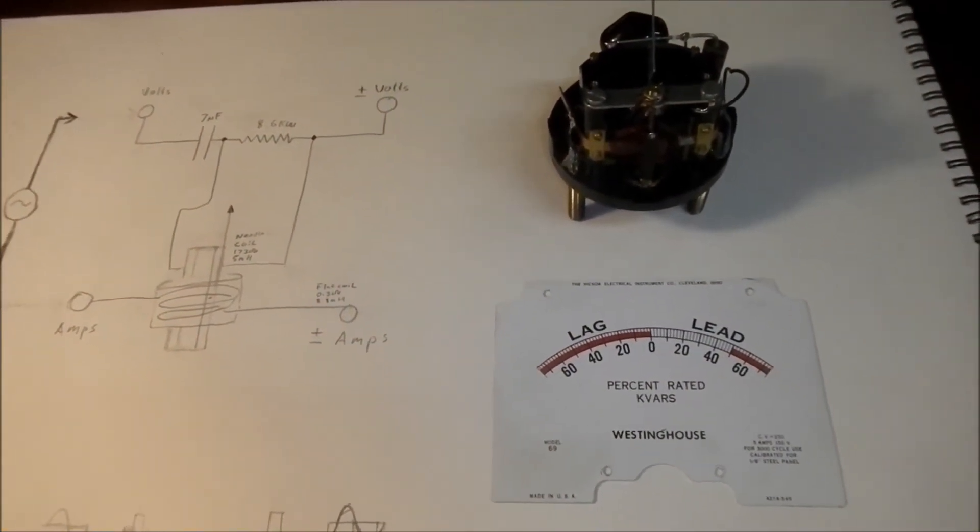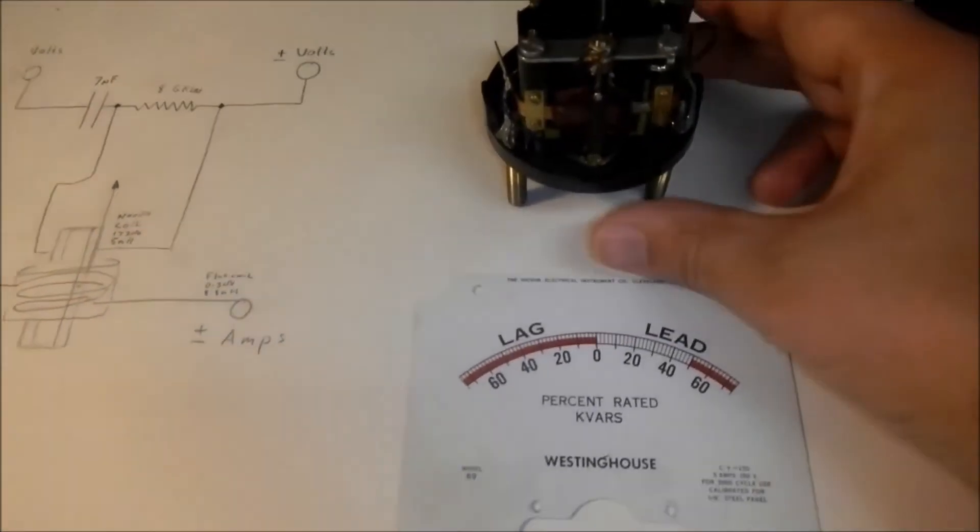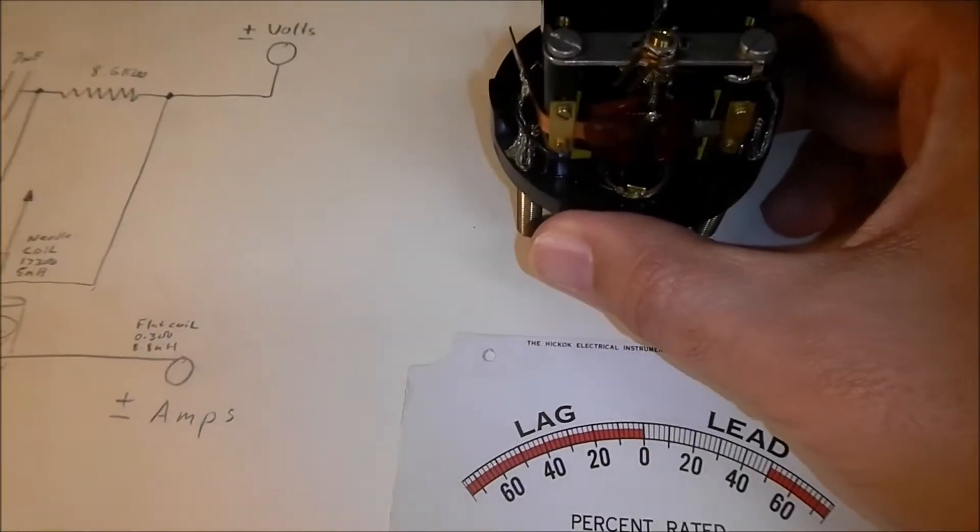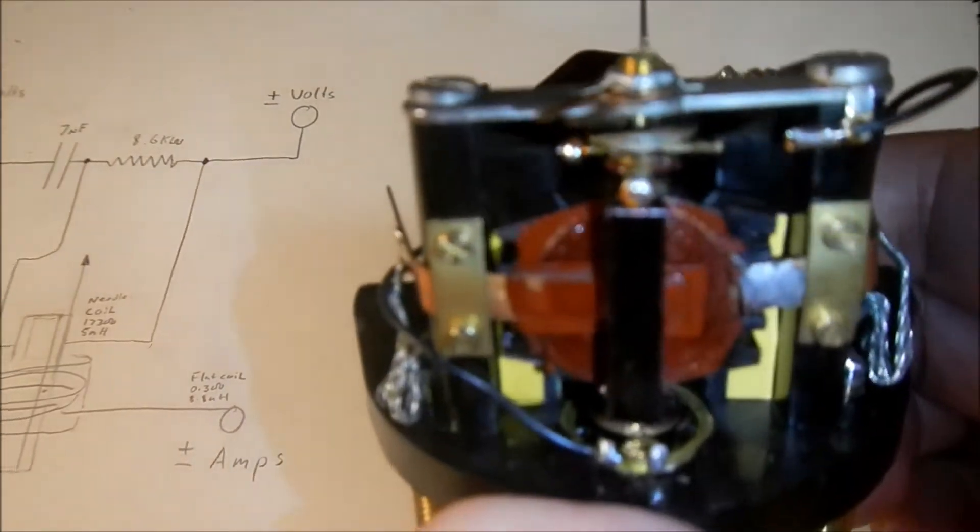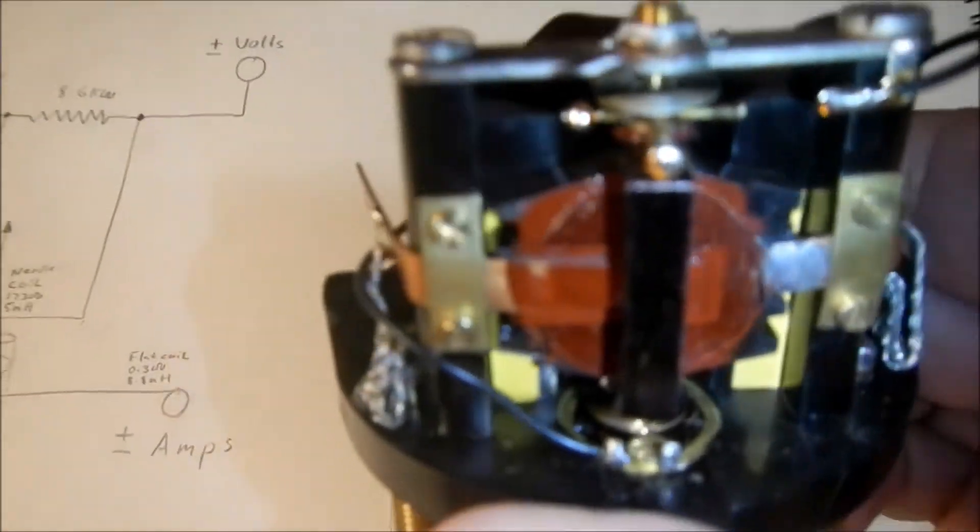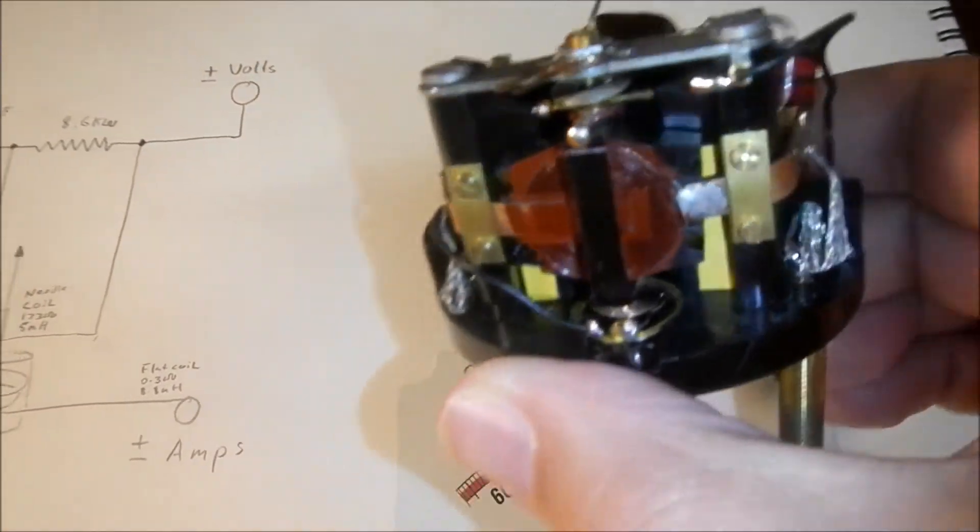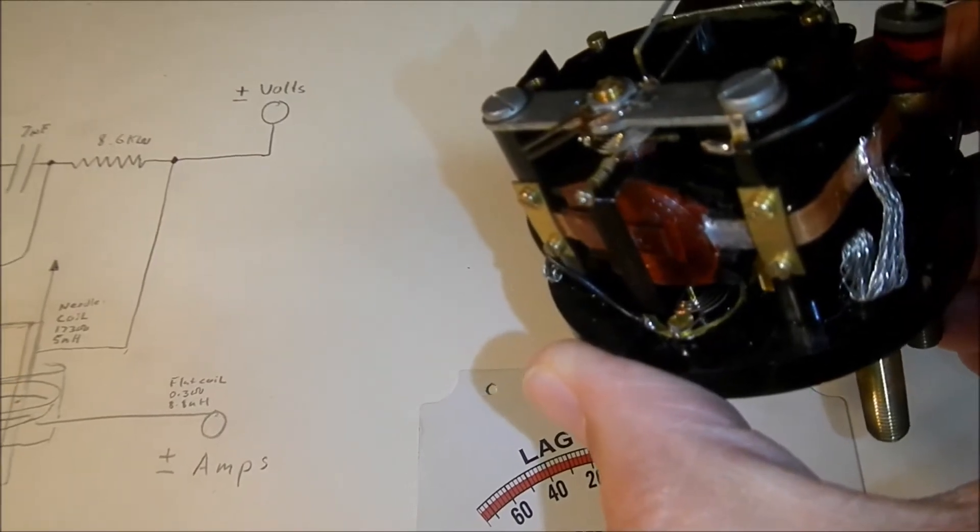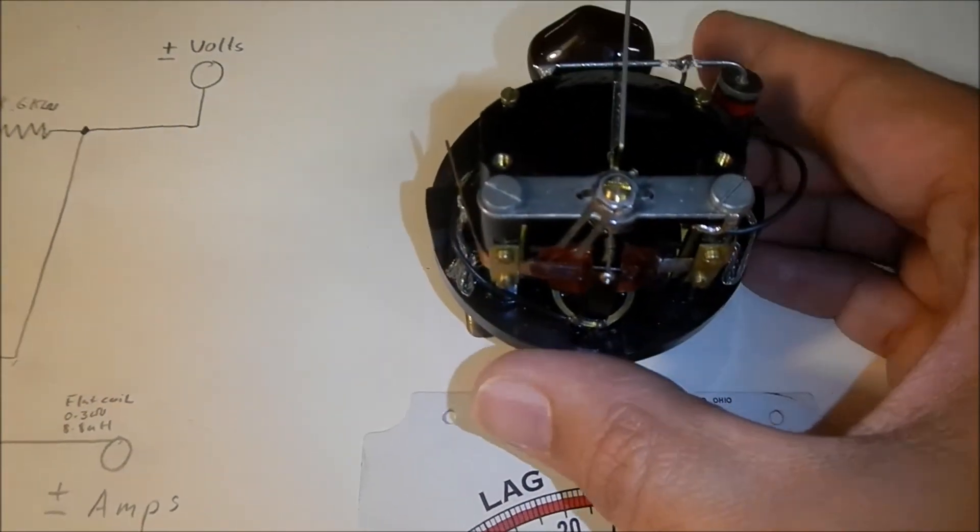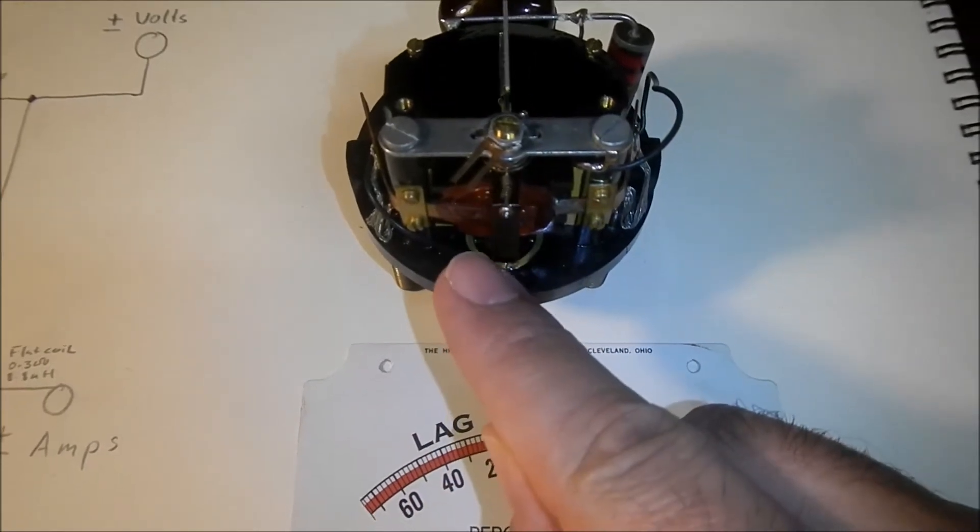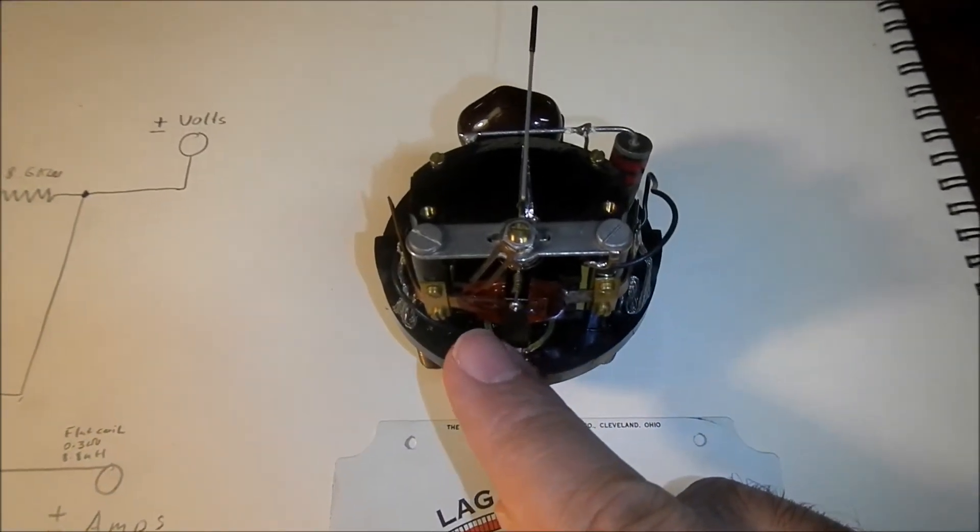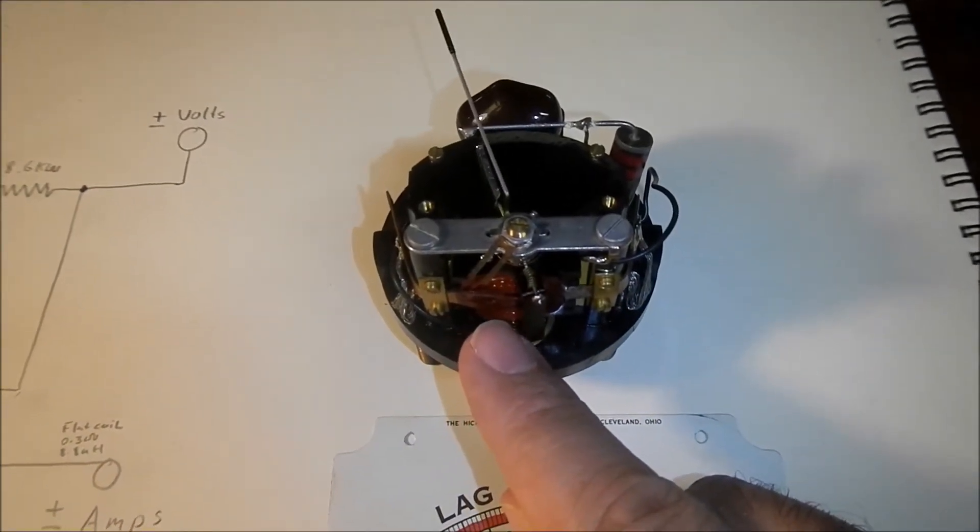But it's kind of neat, it's an analog power factor meter and what it has is two coils perpendicular to each other. And when the current in one coil becomes out of phase with the current in the other coil, it will deflect the meter.